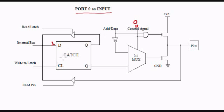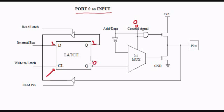A 1 has to be written onto the latch, and when we enable this latch, the data is visible at the output — we get 1. And this is the complement, we get 0. And this is a 2-to-1 MUX.